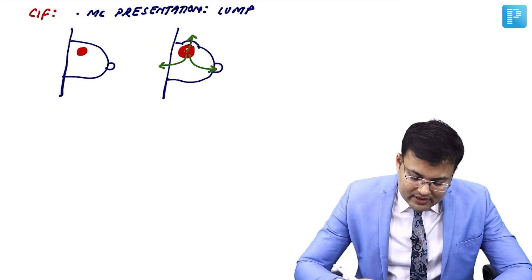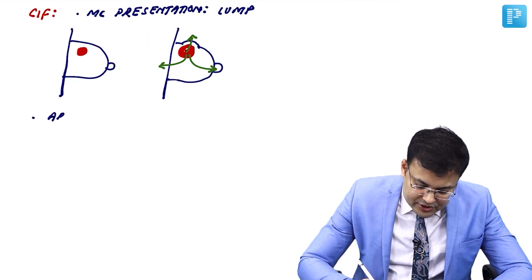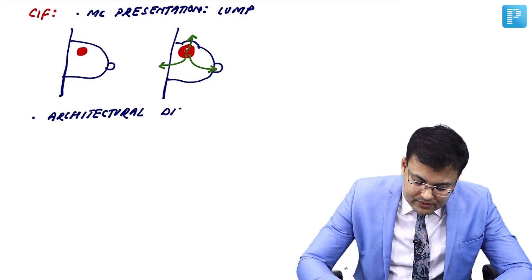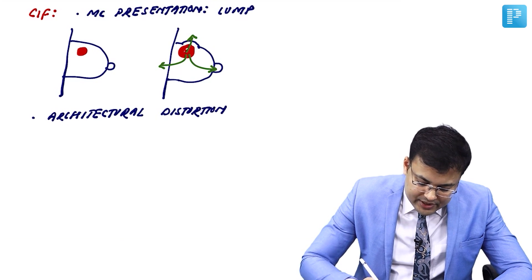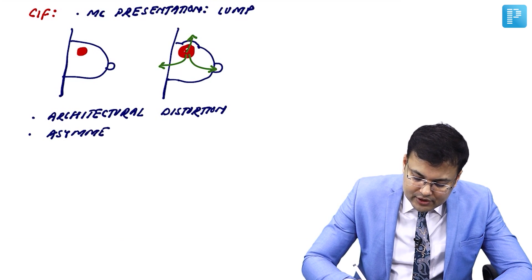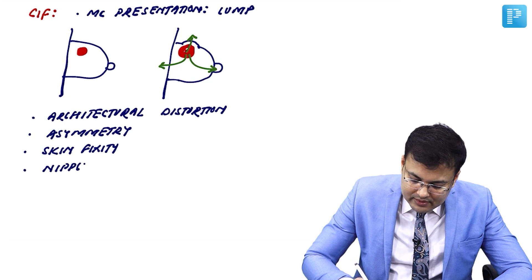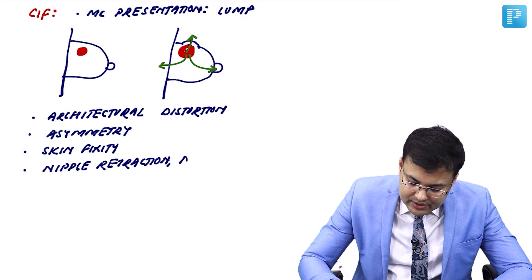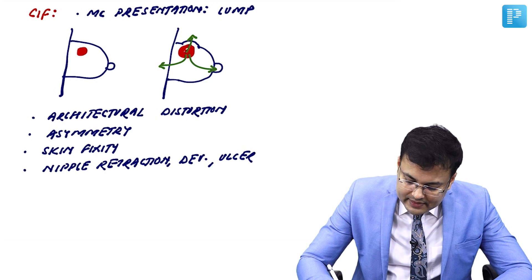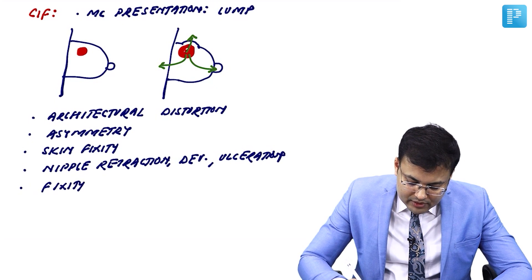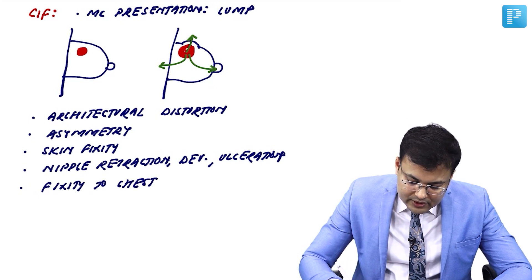So the other presentations include: architectural distortion, asymmetry, skin fixity due to skin involvement, nipple retraction, deviation, and ulceration due to nipple involvement, and fixity to the chest wall due to involvement of the chest wall.